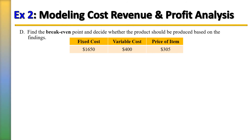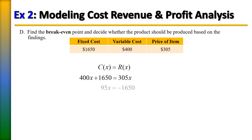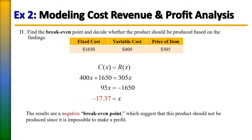To find the break-even point, we set the cost function equal to the revenue function and plug in those values. Subtracting 305x from each side and combining like terms gives us 95x = −1,650. Dividing by 95 gives x = −17.37. Since the break-even point is negative, that represents a loss, which suggests this product should not be produced since it is impossible to make a profit.